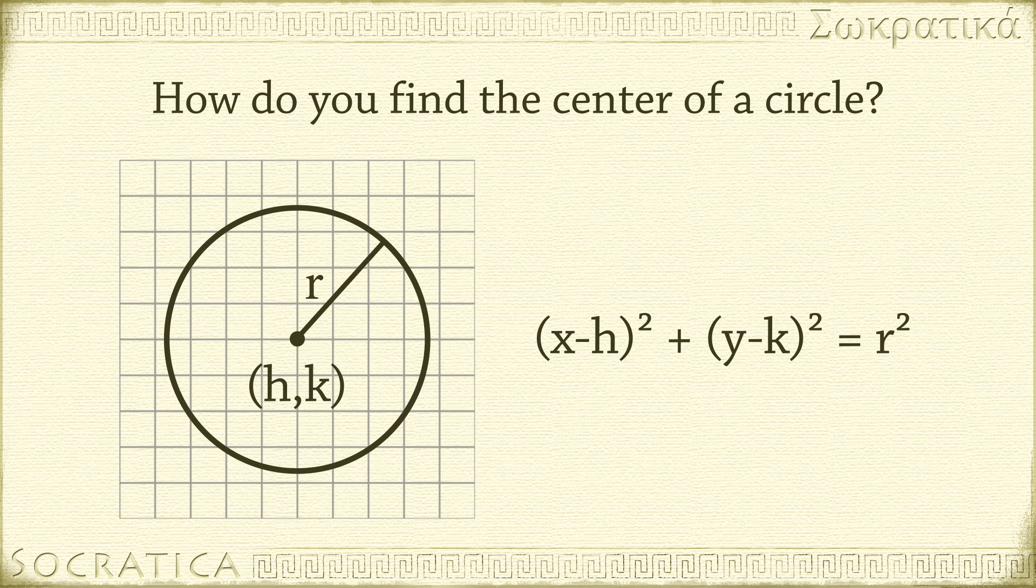The equation of a circle has three parameters: h, k, and r. To find these three parameters, you need to know three points on the circle. If you have only one or two points, that's not enough.